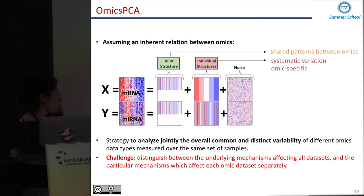The idea is that the OmicsPCA assumes that there's some inherent relation between the different data sets. So imagine we have mRNA data and microRNA data and we think that there's some shared patterns between both of the omics that we will call the joint structure. And also there's some systematic variation that is associated to the individual omics and there's some noise.